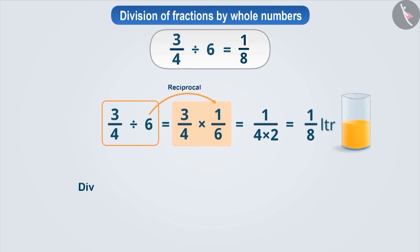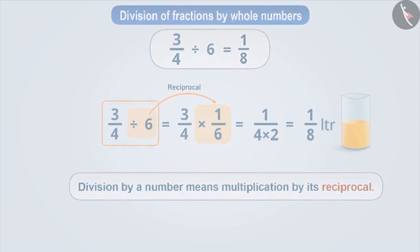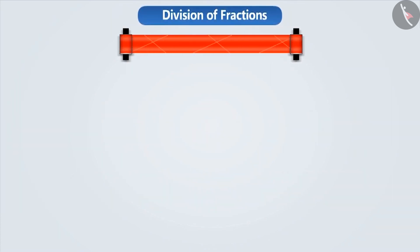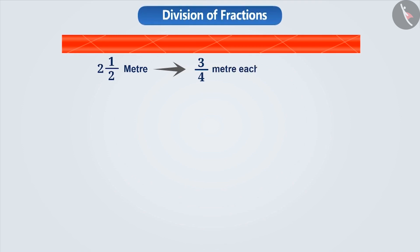Keep in mind that division by a number means multiplying it by its reciprocal. Now suppose we have two-and-a-half metre long ribbon. If we want to cut it into pieces measuring three-fourth metre each, then how many parts will we be able to make?